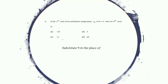How can we do? Let us substitute 9 in the place of n. What happens? 3 into 9, minus 2. That is 27 minus 2, 25. So the answer is D.